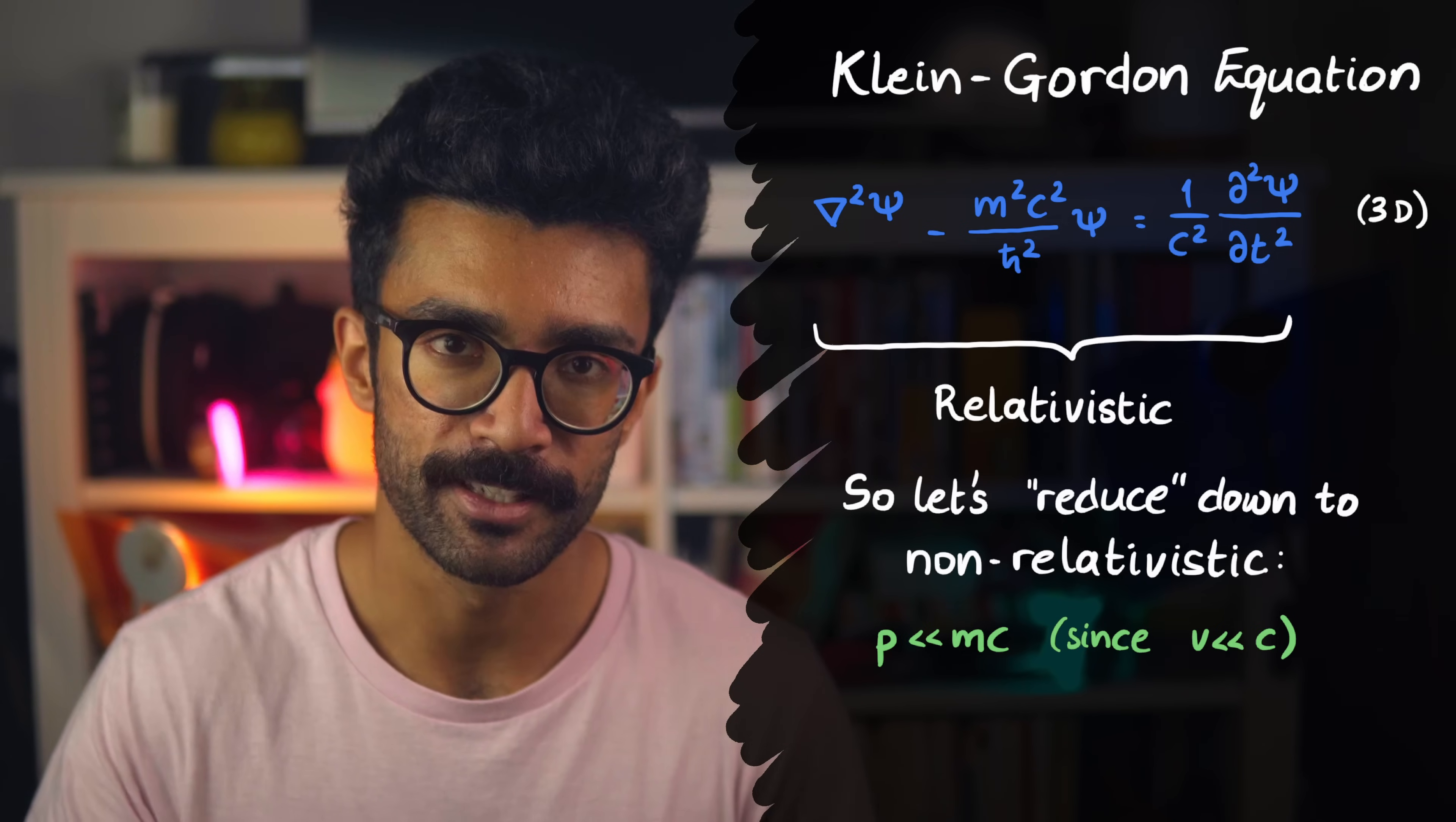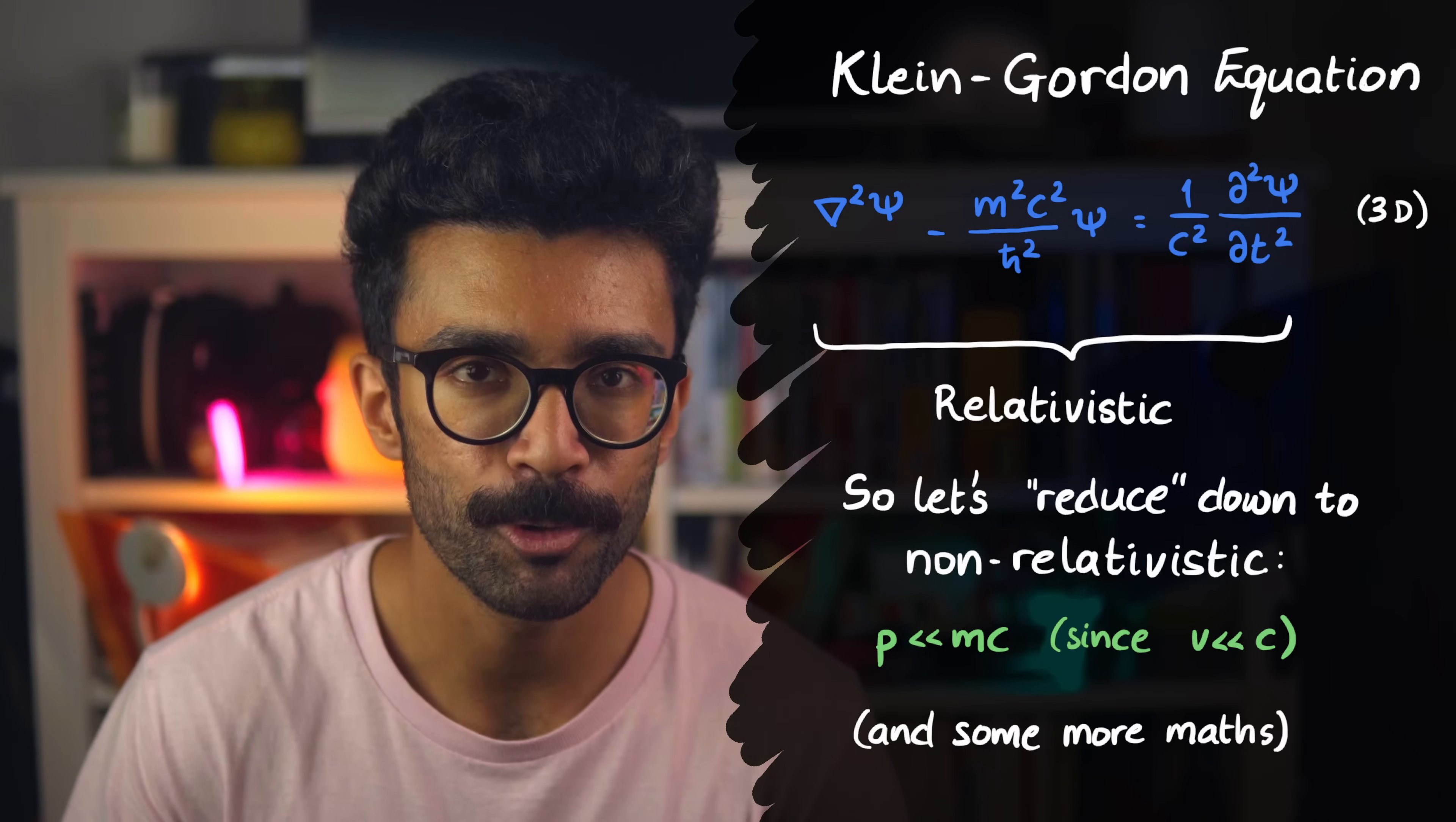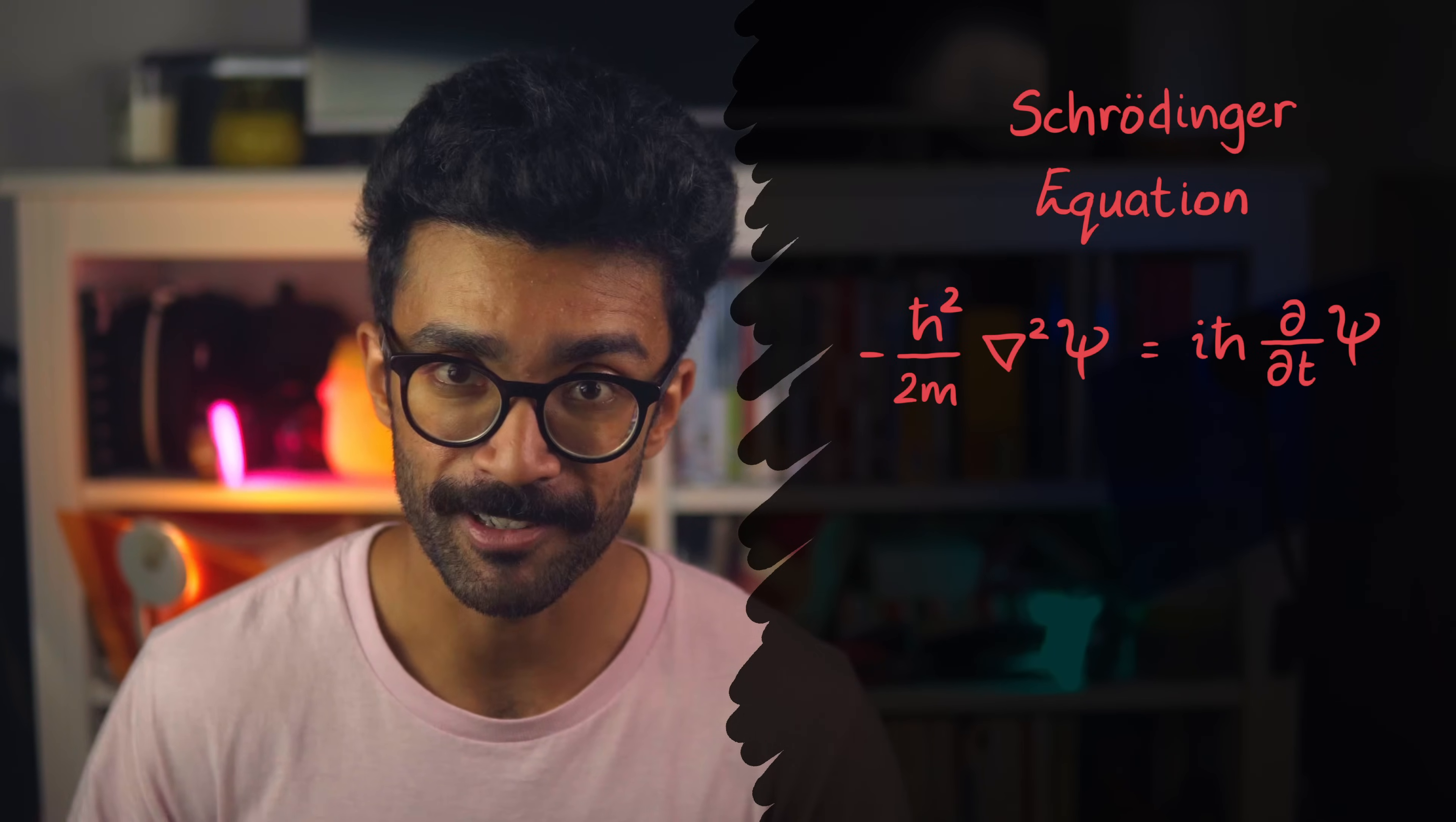So therefore, mv, which is its momentum, will be much smaller than mc. The exact mathematical details aren't super important, but when we sub in this information and do all the maths, we're left with, drumroll please, the Schrödinger equation.